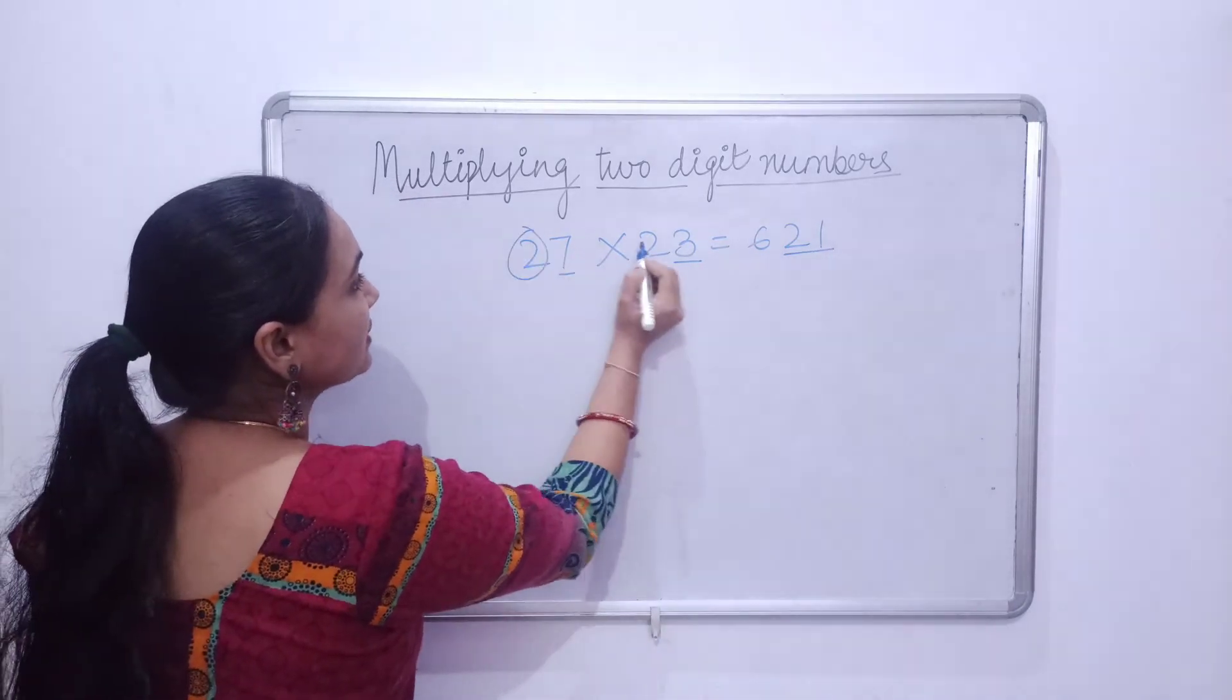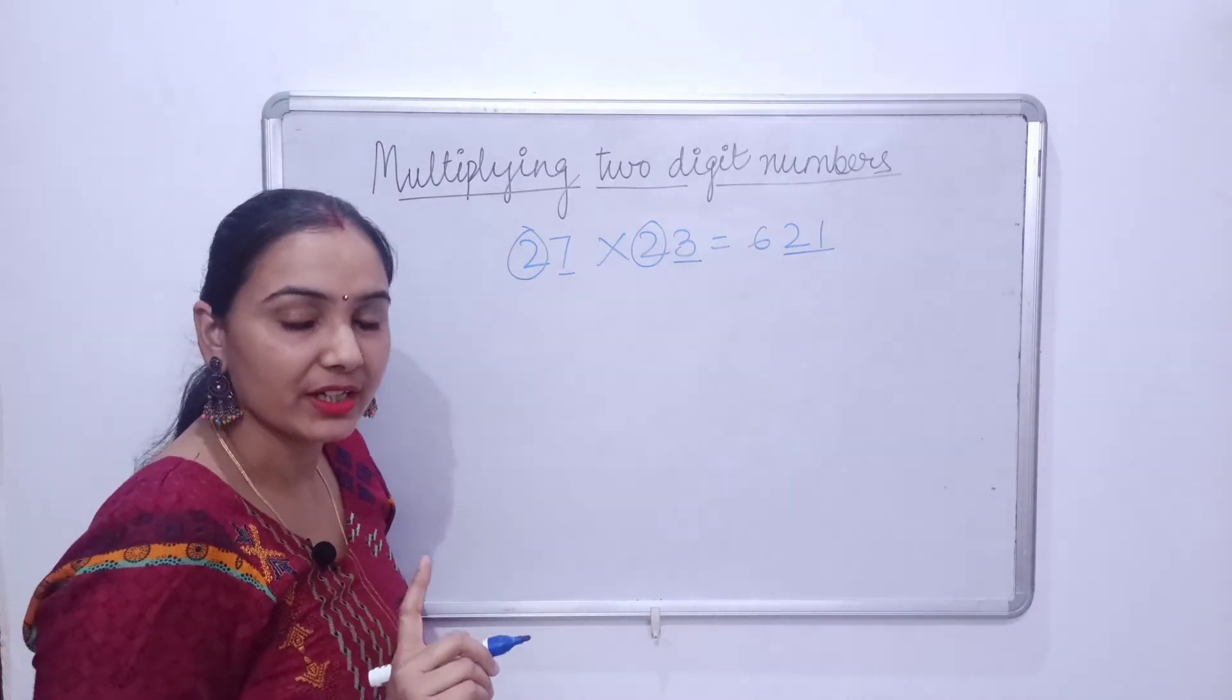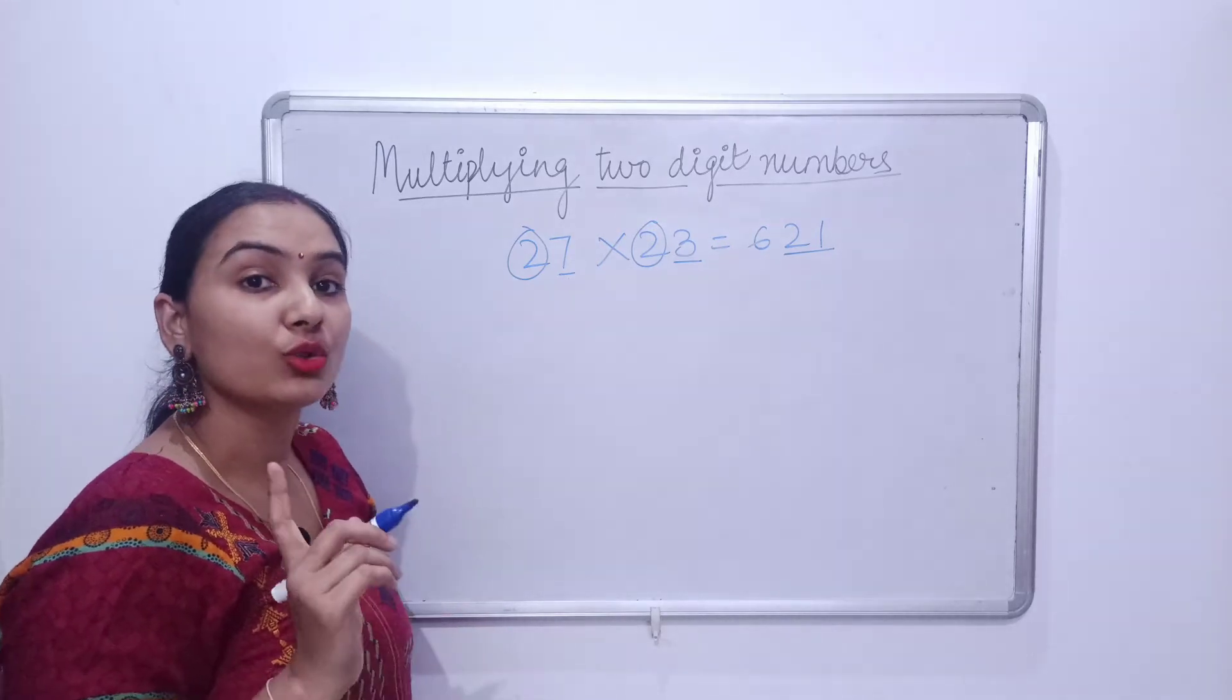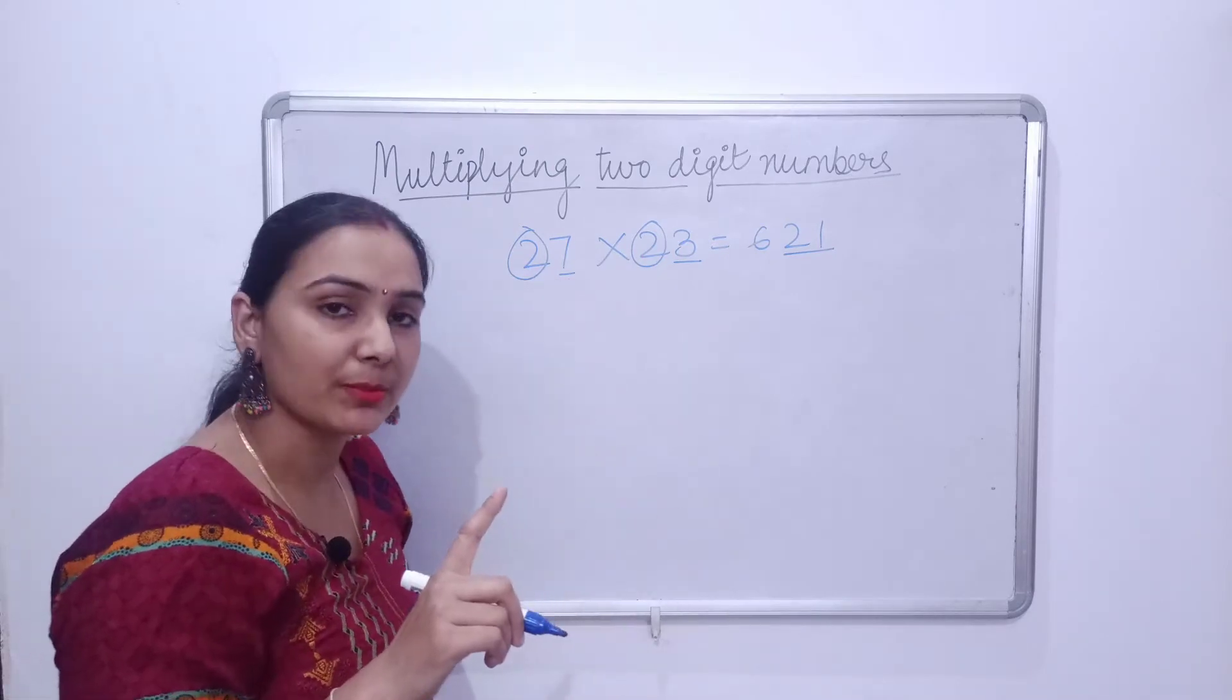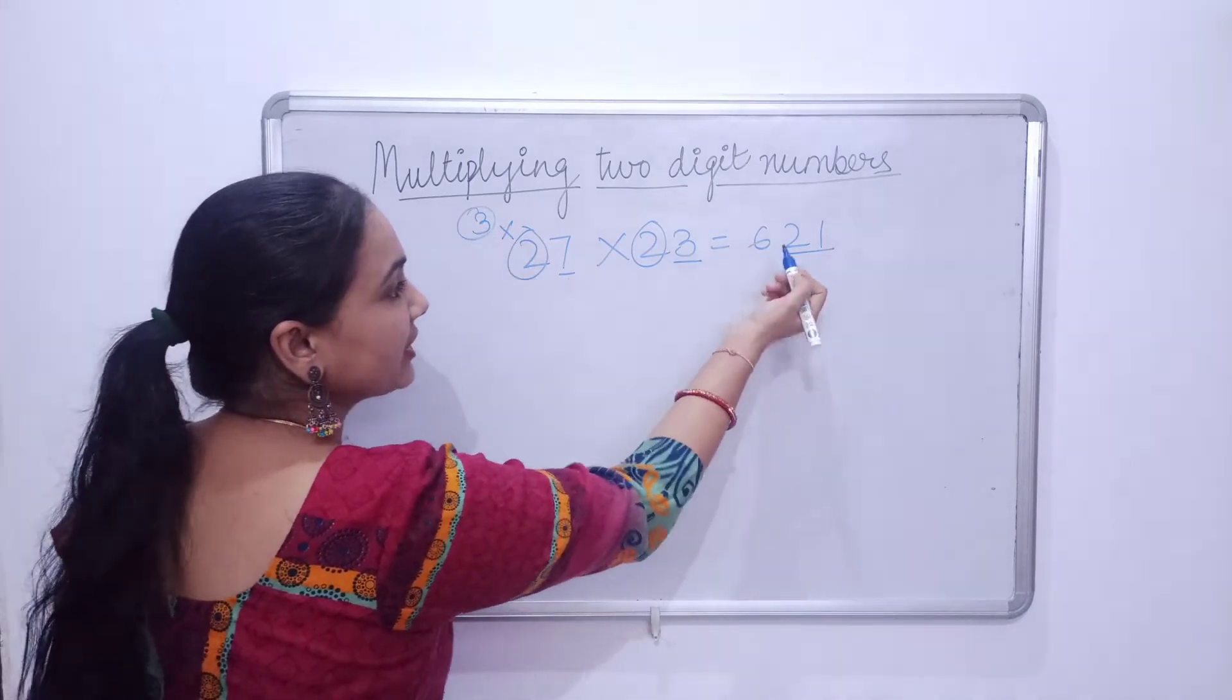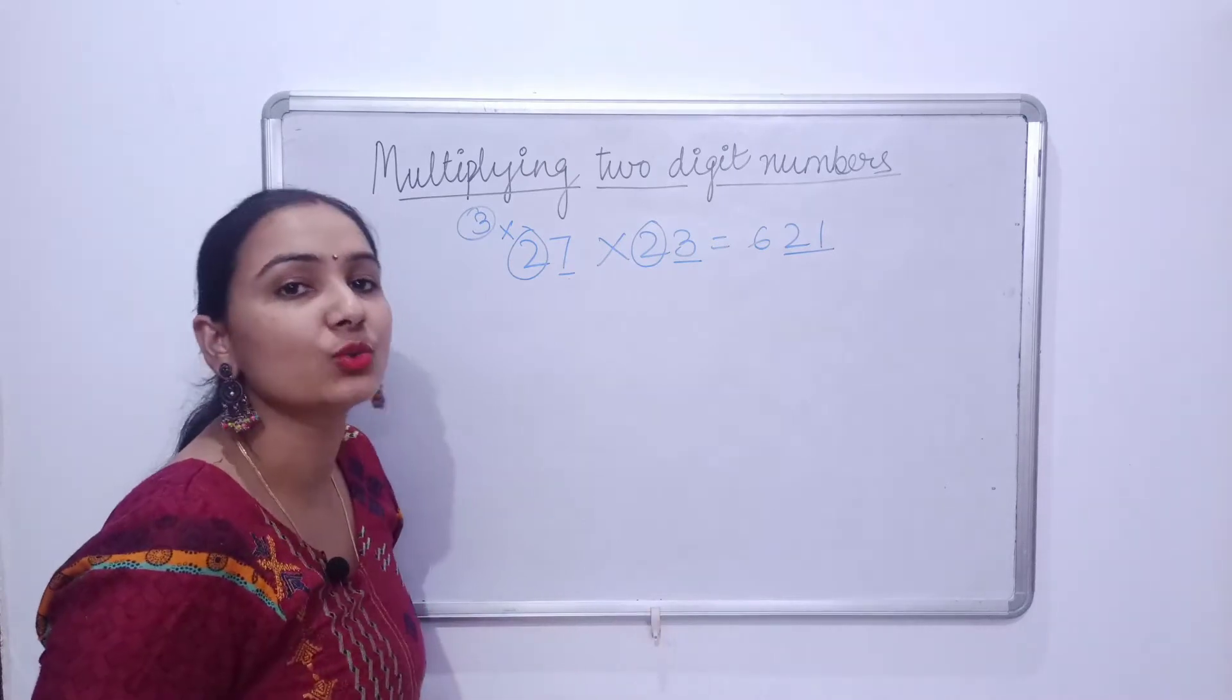Now, we have here tens-place digits—both are the same. So when our tens-place digits are the same, what we need to do is multiply that number by its successor. So I have multiplied it here: 2 times 3 is 6. So the answer is 621.